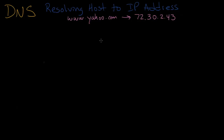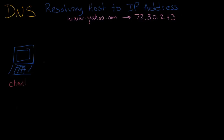I'm going to show you in this video the steps that the domain name system goes through in order to do a forward lookup for you. It all starts with your computer. Your computer is a DNS client — a DNS client is one that issues a request to do a forward lookup. A DNS server is one that answers that request in the form of a response.